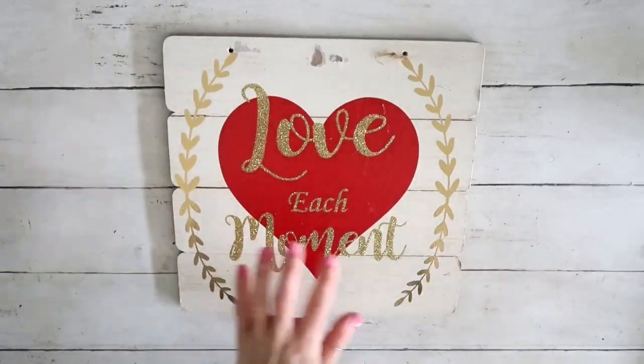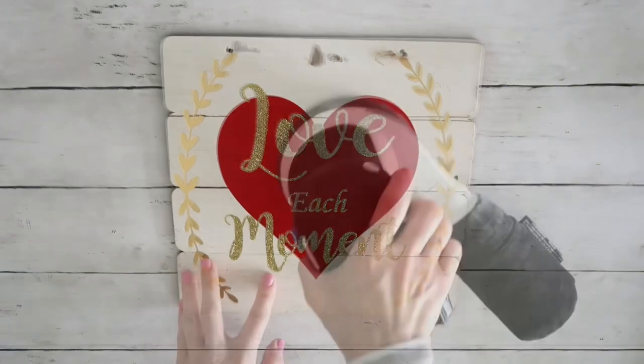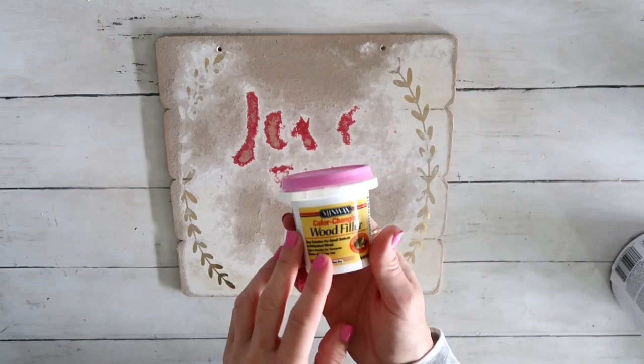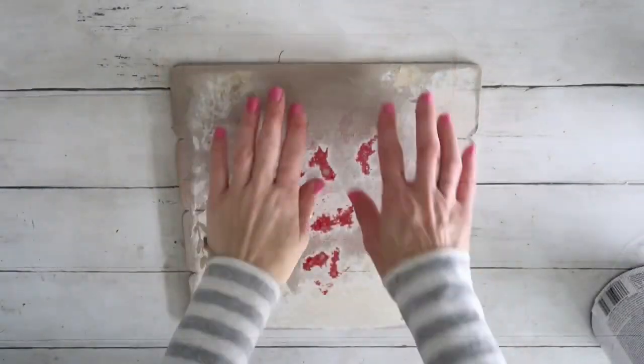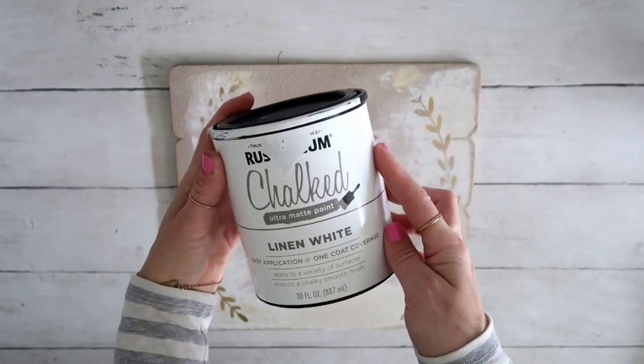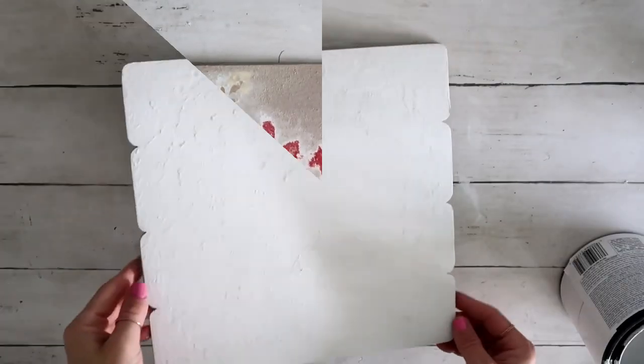First I'm going to take my sander and sand it off as much as possible. This is what I was left with, and now I'm going to fill out the holes with a wood filler. After they were dry and sanded off, I'm taking this Rust-Oleum chalk paint in linen white color to give this a few coats.